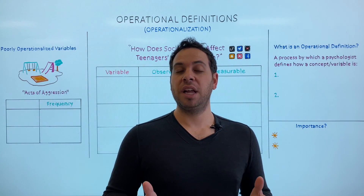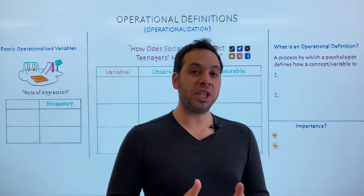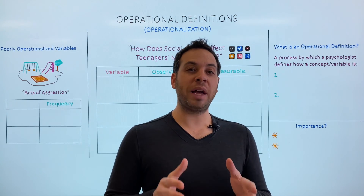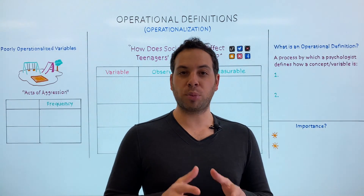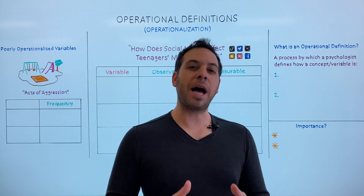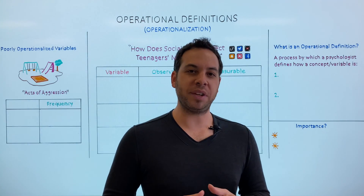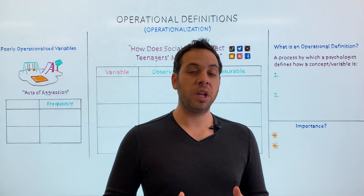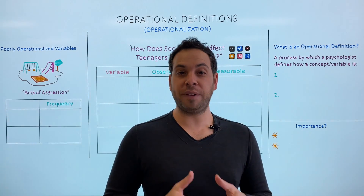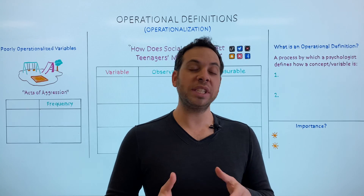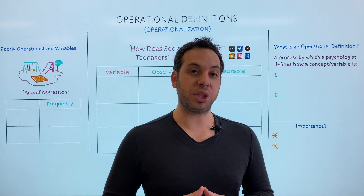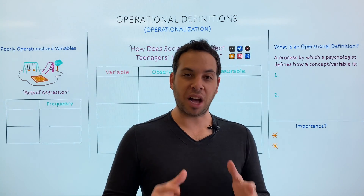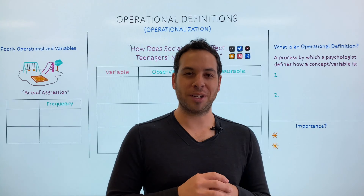Now it's not easy, but in psychology and across the sciences, we do have a solution to this problem. And the answer is operational definitions. In this video, we're going to explain how we define variables using operational definitions and the significance of it. So let's get started.